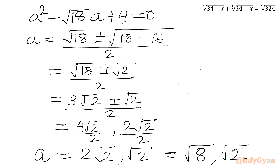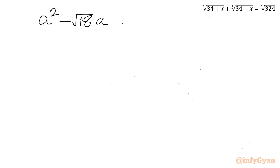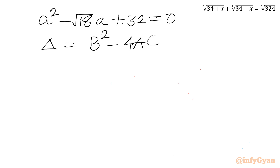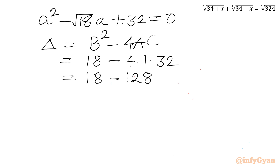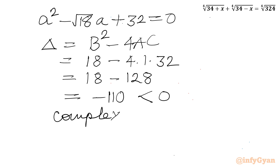Now let us check the second quadratic: a² minus root 18 times a plus 32 equals 0. Checking the discriminant: b² minus 4ac equals 18 minus 4 times 1 times 32 equals 18 minus 128 equals minus 110. Since the discriminant is negative, this equation generates only complex solutions, so we reject it.